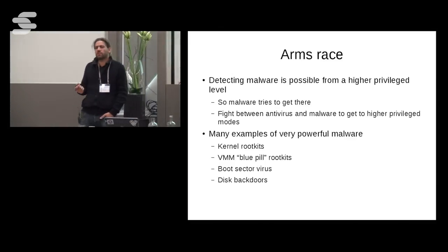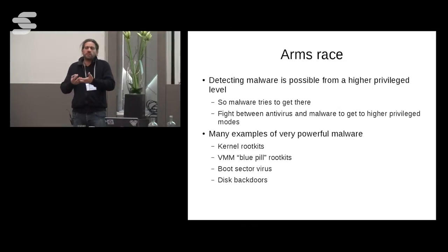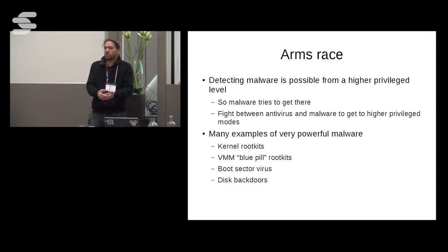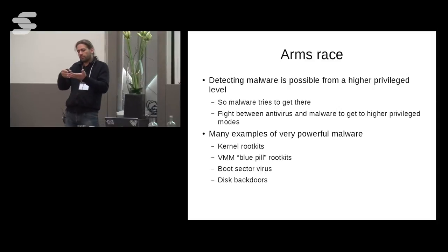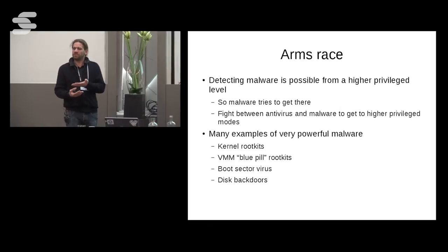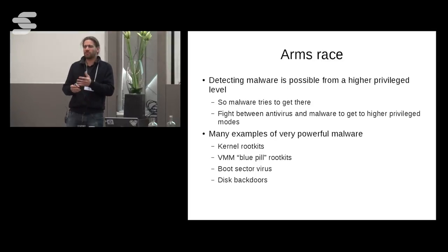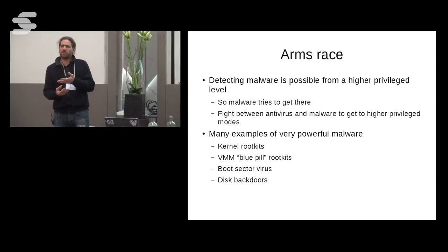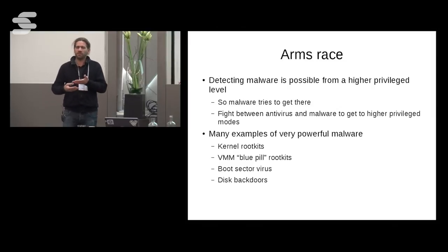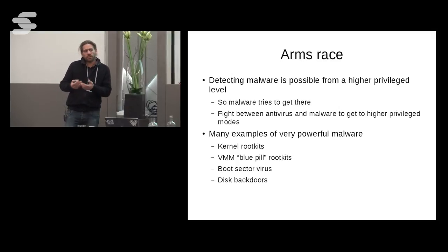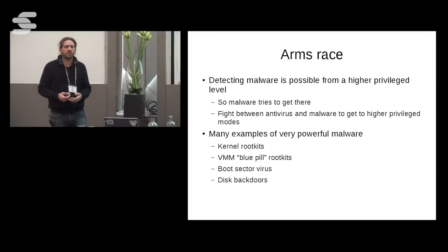There are virtualization hypervisor rootkits — the famous blue pill rootkits. These are malware that infects a Windows computer and, if you have virtualization support, installs itself below Windows and virtualizes Windows on the fly without rebooting. It takes the place of the hypervisor, getting completely below the kernel into so-called ring minus one. From there, it's impossible to detect if it's well done.